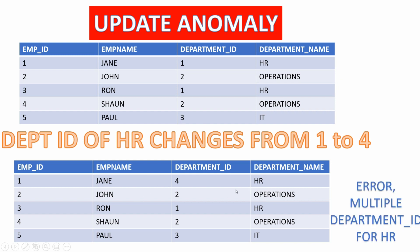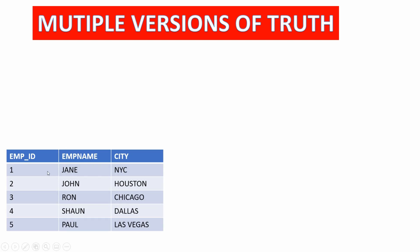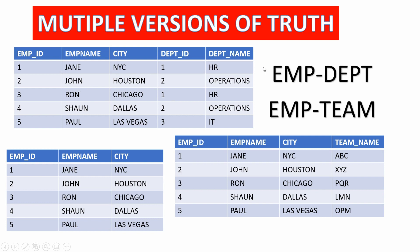Update anomalies may happen in a slightly different way. We have an employee table that contains ID, name, and city for all employees. This table acts as a source for an employee department table and an employee team table. Sean moves from Dallas to Los Angeles. The information is updated in the team table but is not updated in the employee department table. If we only look at these two tables we cannot be certain if Sean lives in LA or Dallas. This is referred to as multiple versions of truth — the same information is present at multiple places and they are not in sync. This happens in denormalized databases more often than you would imagine.